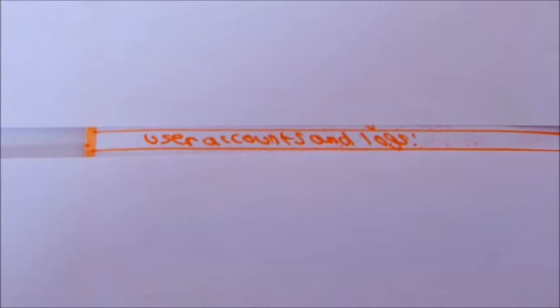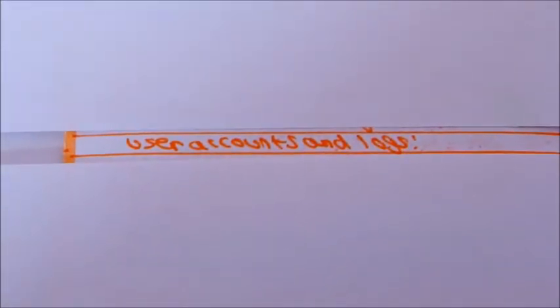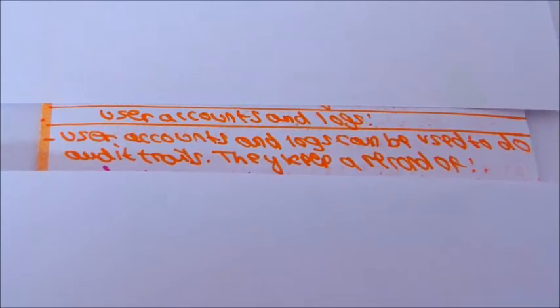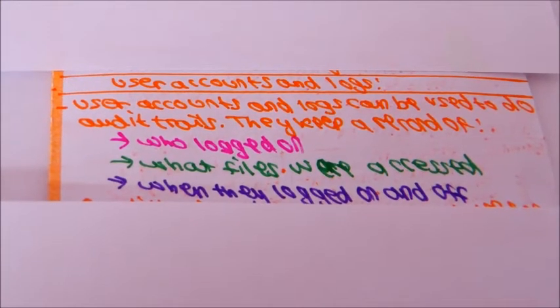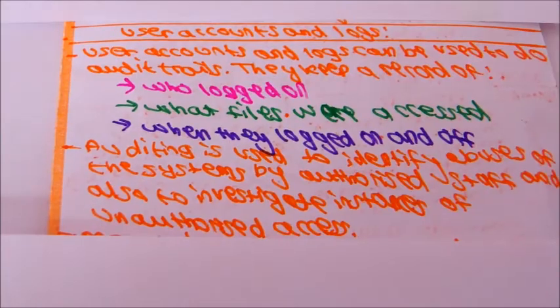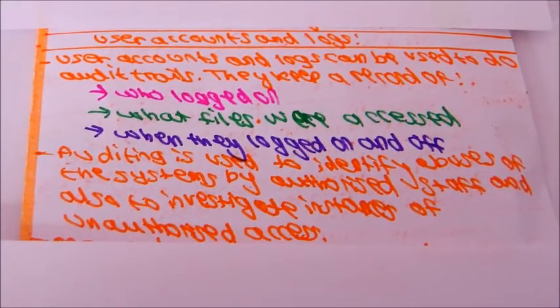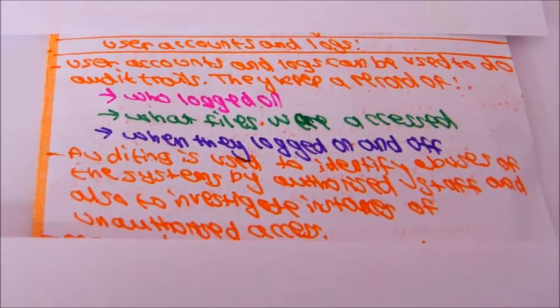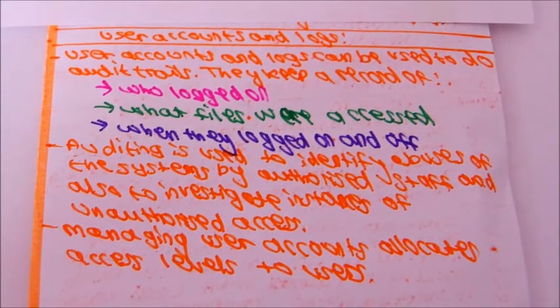We're now going to talk about user accounts and logs and how they can be useful in securing data. User accounts and logs can be used to do audit trails. They keep a record of who logged on, what files were accessed and when they logged on and off. Auditing is used to identify abuses of the system by authorised staff and also to investigate instances of unauthorised access. Managing user accounts allocates access levels to users.